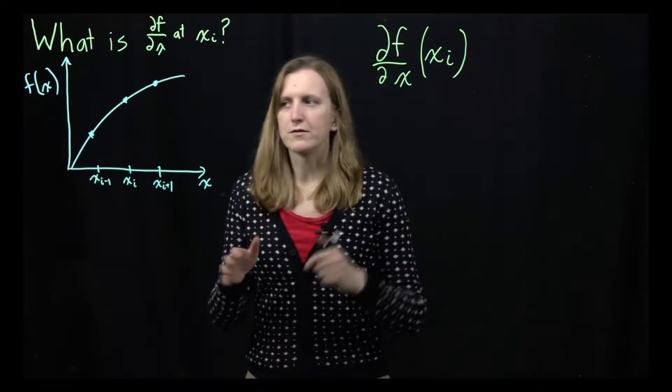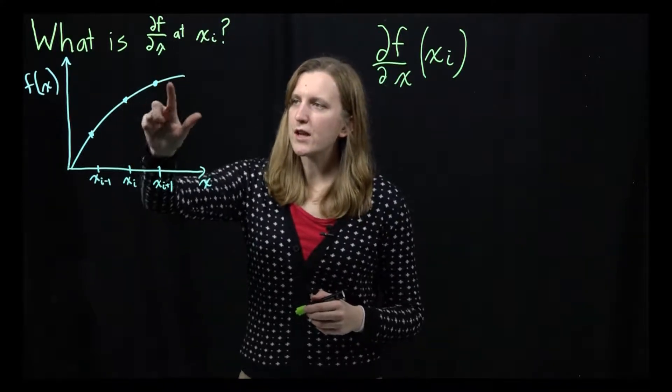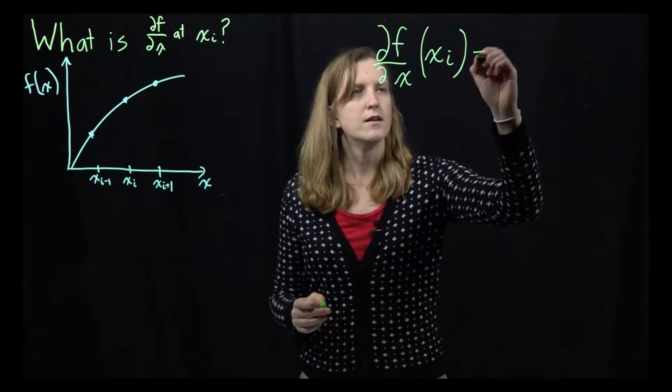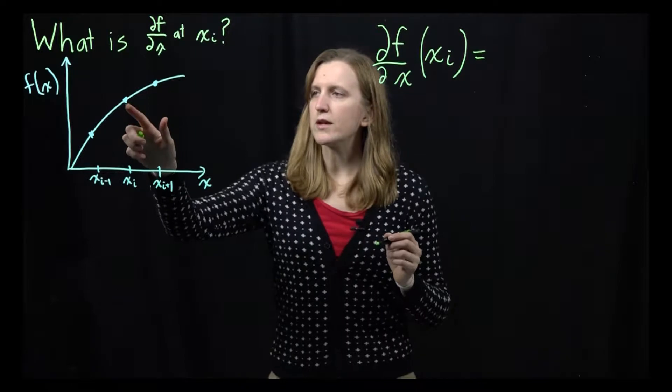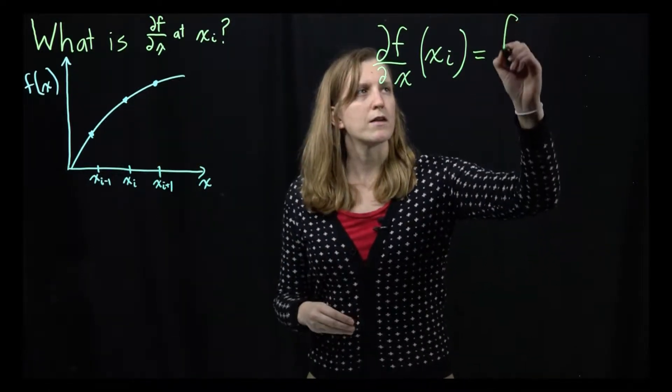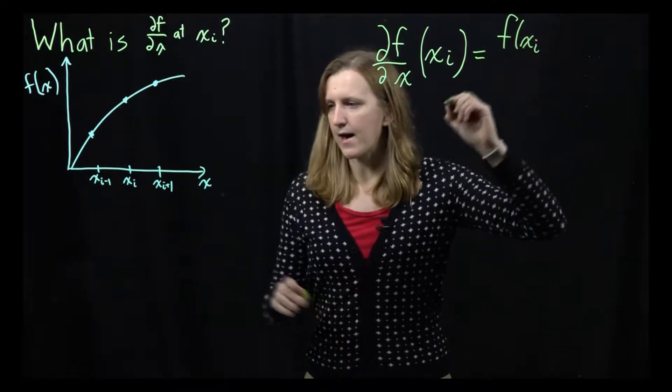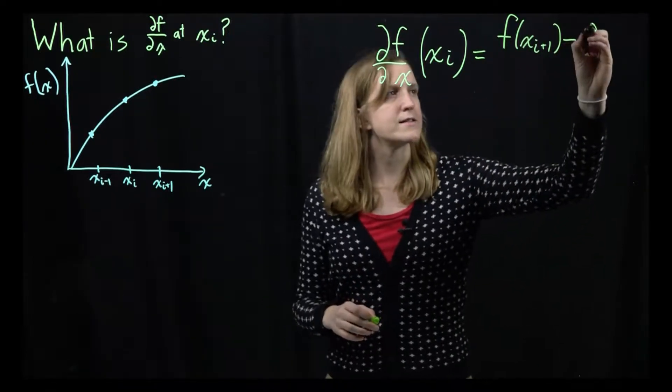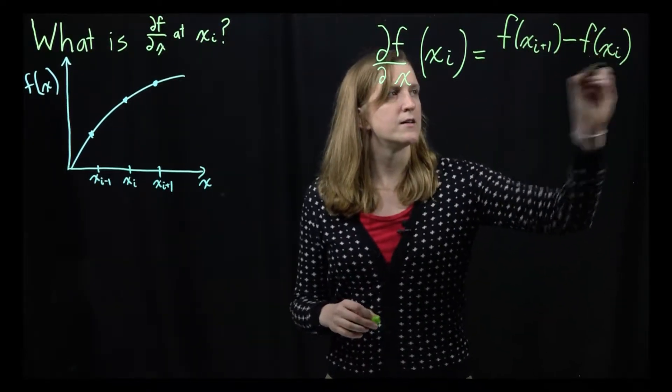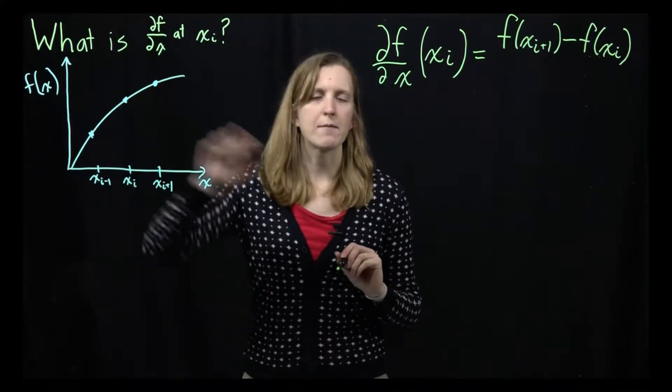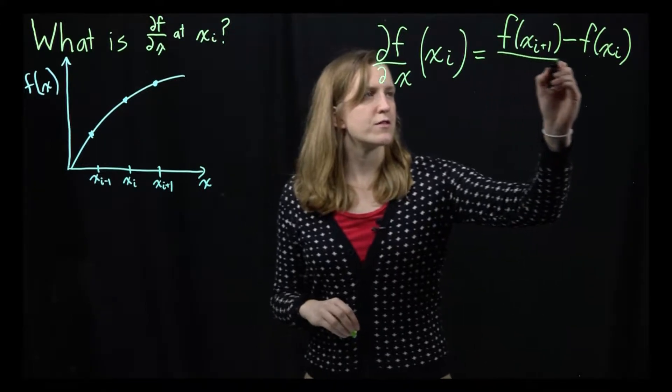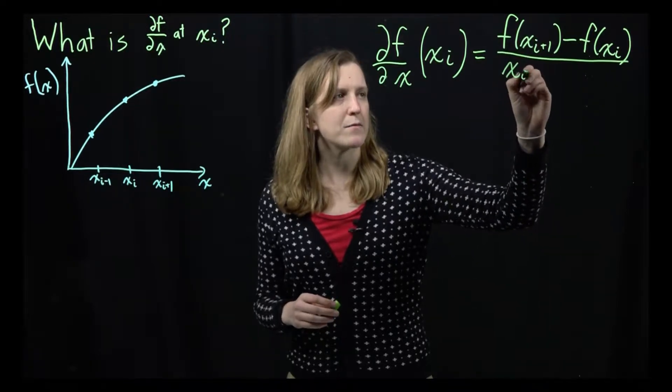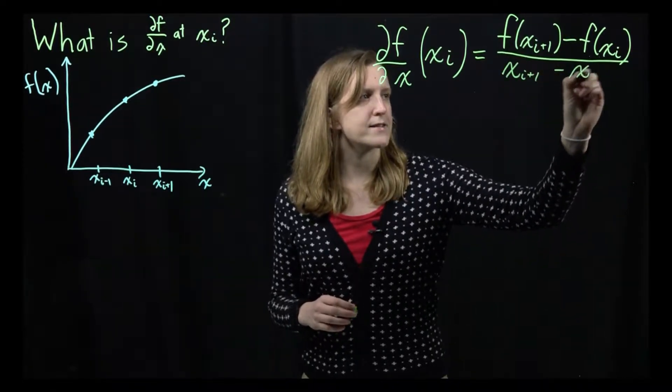And so the way we can do this estimate is, so remember slope, it's just rise over run. So it's how much does the height change with the distance. And so we can just estimate this. We're going to look at this point minus this point. So we'll write this as f of xi plus 1 minus f of xi. So that's the change in the height from this point to that point. And then the denominator, that's just the change in the distance. So that's the value of x at i plus 1 minus the value of x at i.